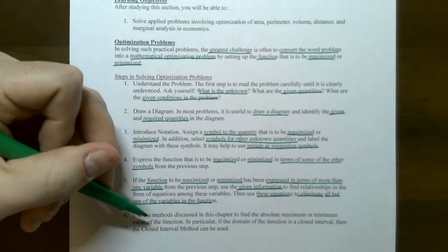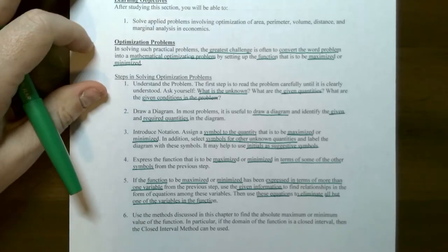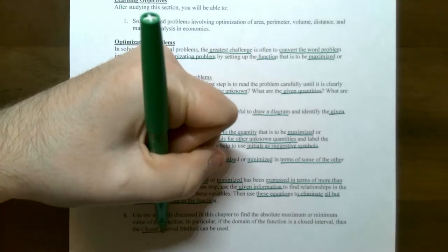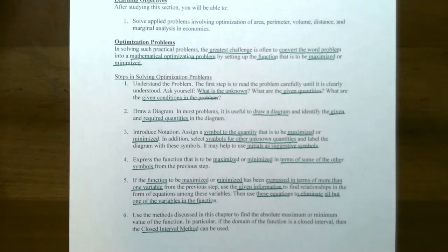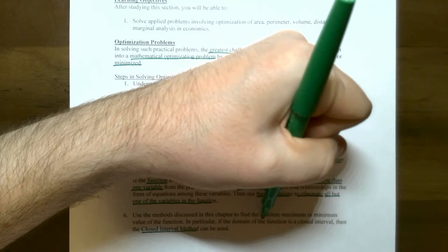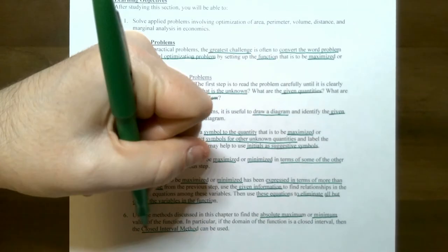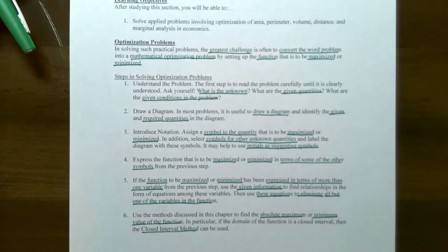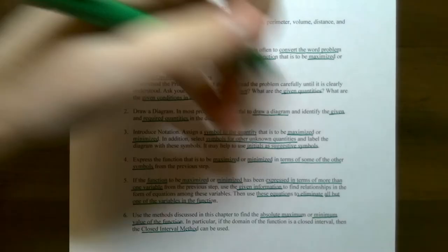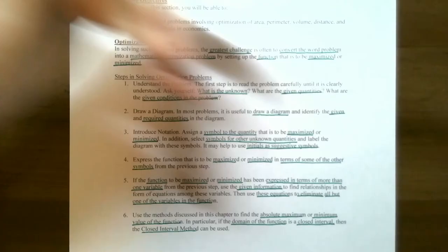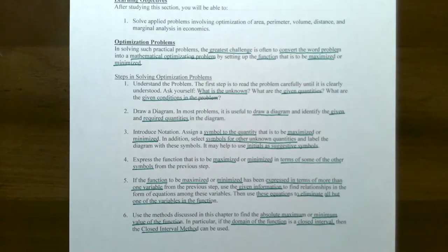Then we get to the calculus step: use methods discussed in this chapter. That means you can use the closed interval method to find the absolute maximum and absolute minimum value of the function. Keep in mind the function needs to be defined on a closed interval and must be continuous to use the closed interval method or the extreme value theorem.